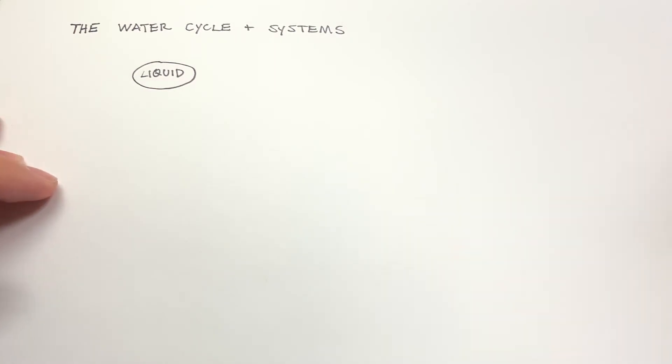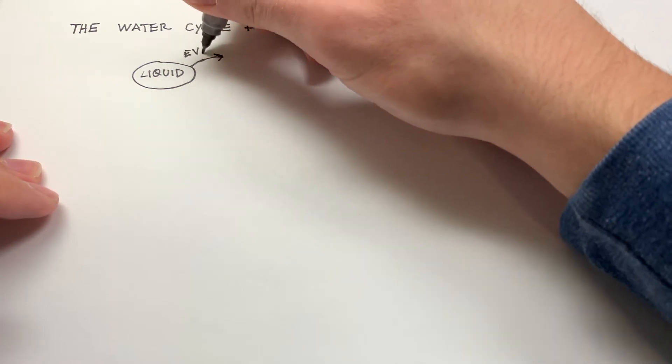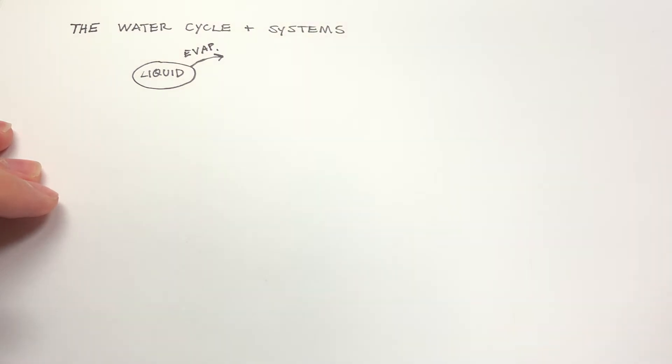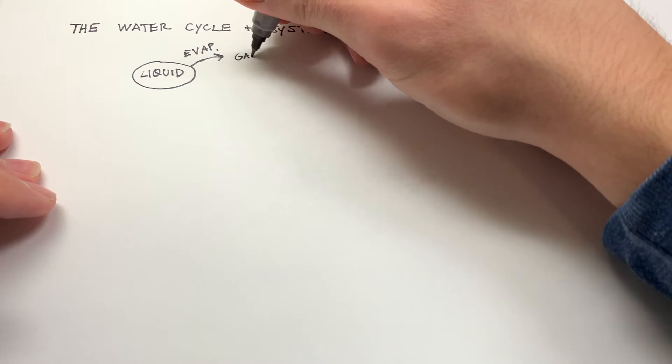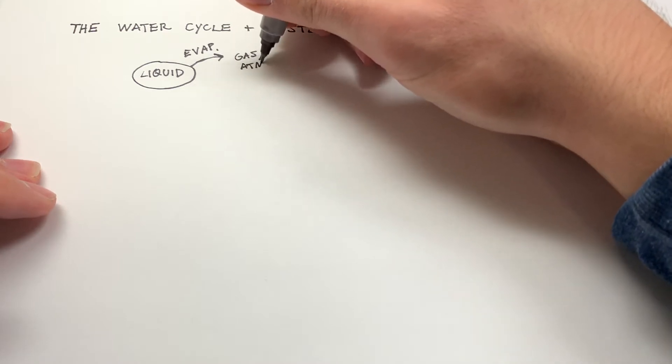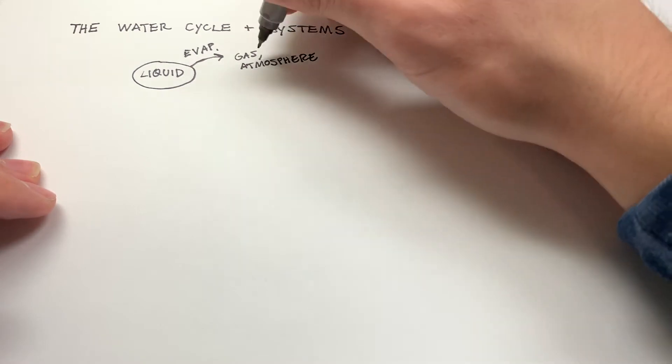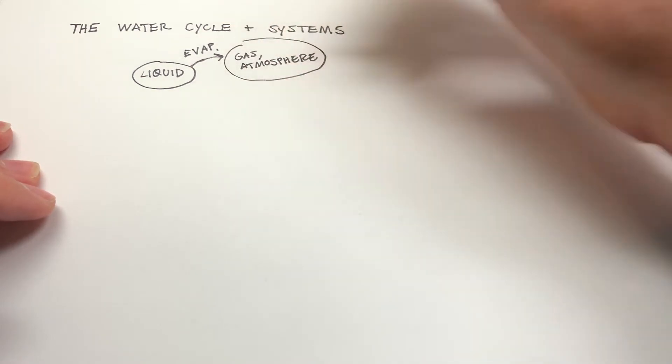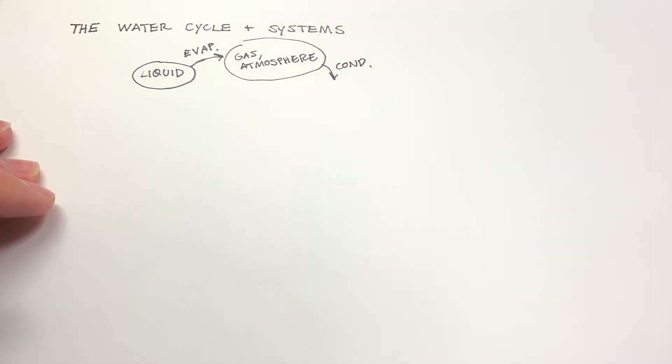That's when energy from the sun, in the form of radiation, heats it up past its boiling point and it evaporates. It becomes a gas. So this is evaporation. Then it goes up into the atmosphere. It is a gas in the atmosphere. And then we know what happens to it is it condenses. And it becomes a liquid in the atmosphere, which is clouds.